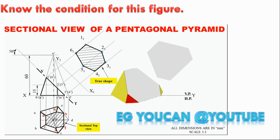You will learn how to use the correct information. For example, if you look at the cutting plane angle 50 degrees — if you look at the front view — then the cutting plane is 50 degrees inclined to HP. That's the meaning. If you look at the cutting plane position: 15 mm above the base and meets the axis of the solid. This tells us that the base edges are perpendicular to the VP.